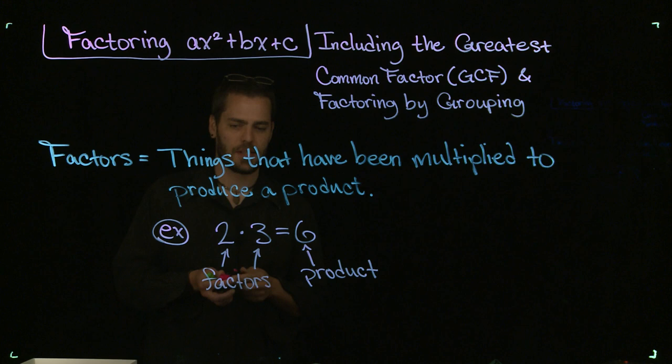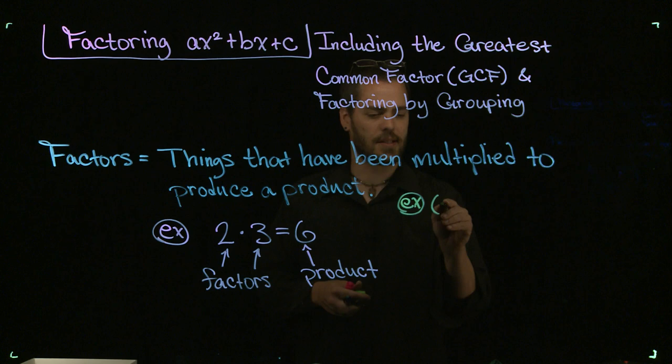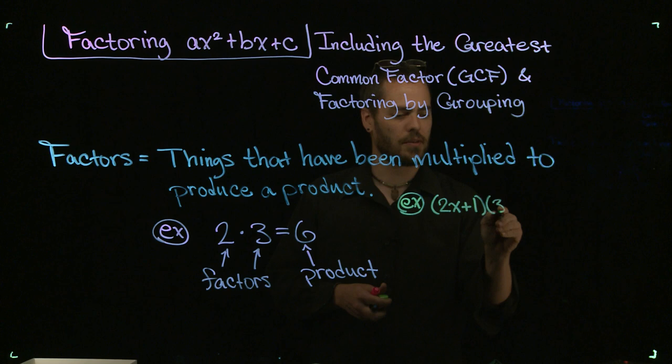But it's not always numbers that are multiplied to give a product. It can be something a little bit more complicated, so let me give you another example of, let's say, a binomial 2x plus 1 times another binomial, 3x minus 5, just to make something up.